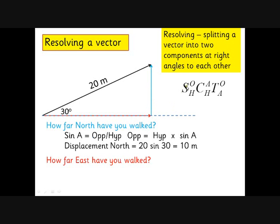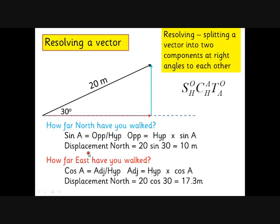How do we work out the distance east? This is the length of this line here. Notice this makes a right angle. We're looking for an adjacent length, so we're going to use cos. You'll always find there's a sine part and a cos part. By the same process, the adjacent equals the hypotenuse times the cos, which comes to 17.3 meters.